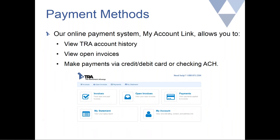One service enhancement TRA is pleased to offer is our online payment system, which we call My Account Link. You can use it to view your TRA account history, your open invoices, and pay any open invoices via either a credit or debit card or by authorizing a one-time ACH withdrawal from your bank account. You can see on this screen a snapshot of what the homepage looks like when you're logged into My Account Link.